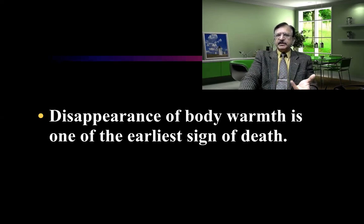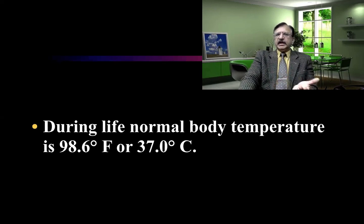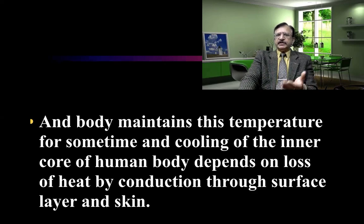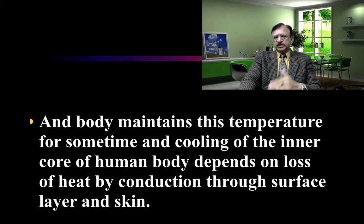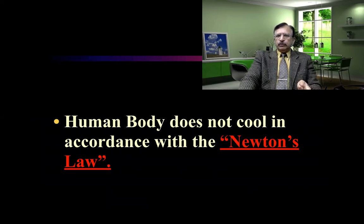Disappearance of body warmth is one of the earliest signs of death. Low body temperature is a sign of either death or hypothermia. During life, normal body temperature is 98.6°F or 37°C. The body maintains this temperature for some time, and cooling of the inner core depends upon the loss of heat by conduction through the surface layer and skin.